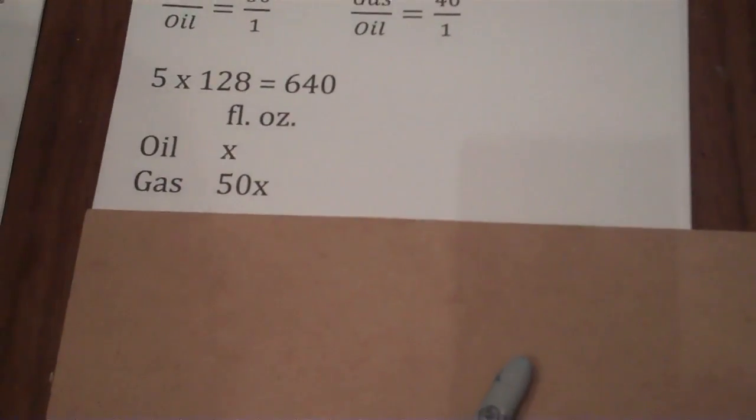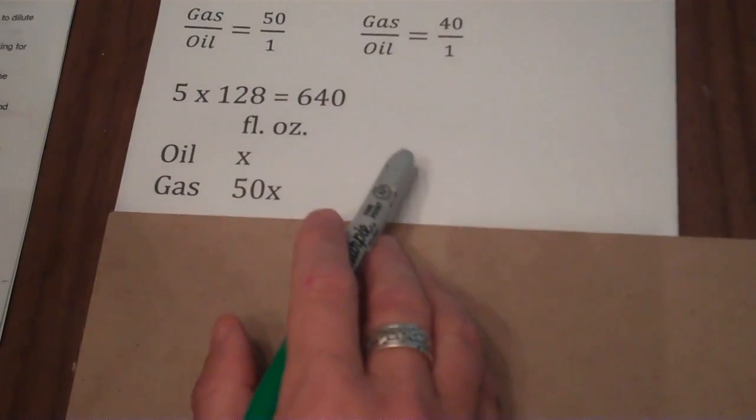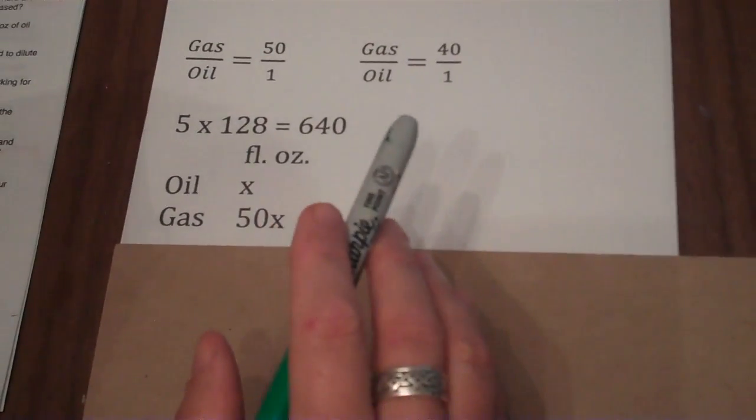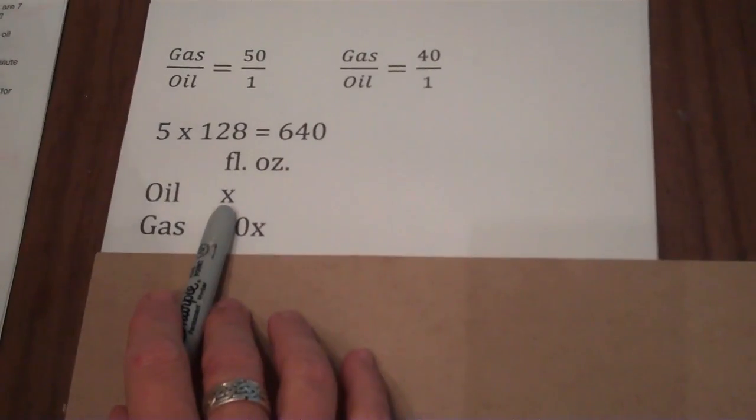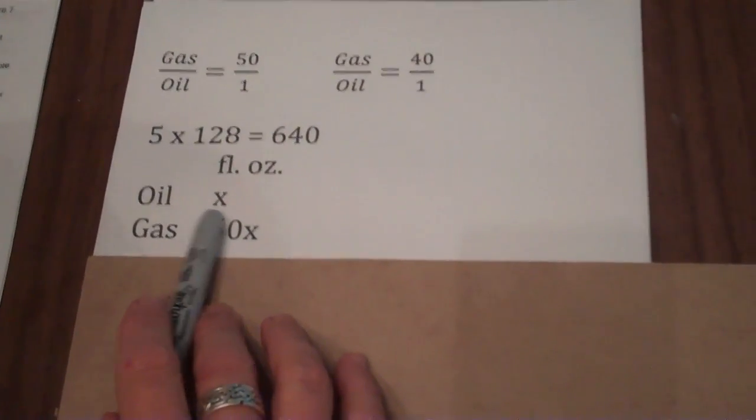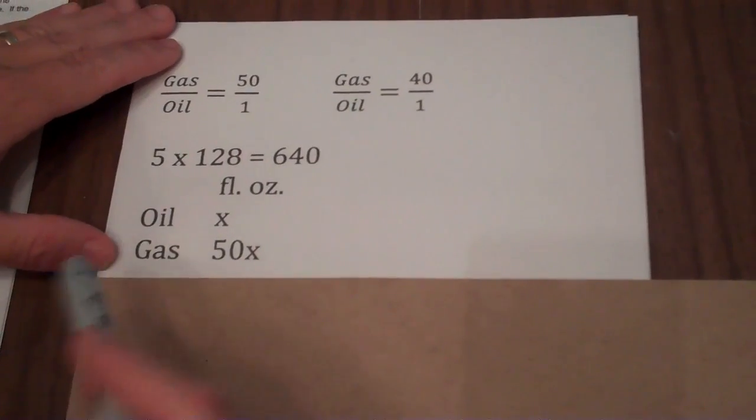Now let's talk about our chart. There were two things I knew to begin with. First of all, the oil-gas mixture was 50 to 1. So however much oil there was, I'll call that x, there was 50 times that much gas. So there would be 50x fluid ounces.